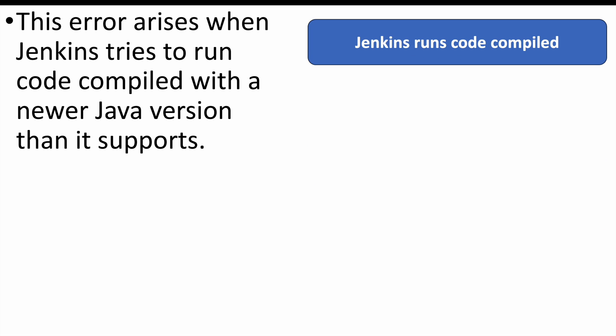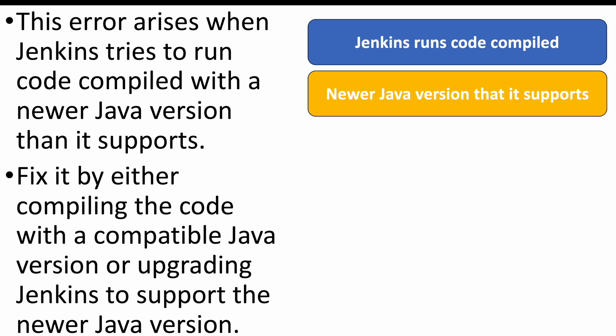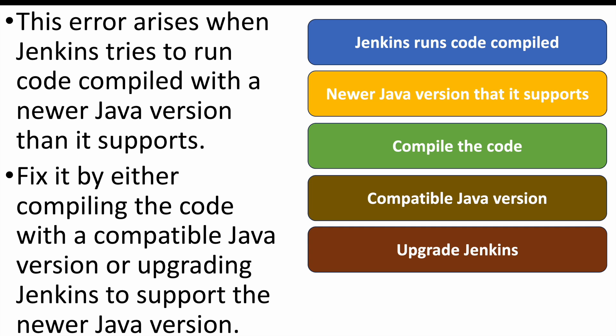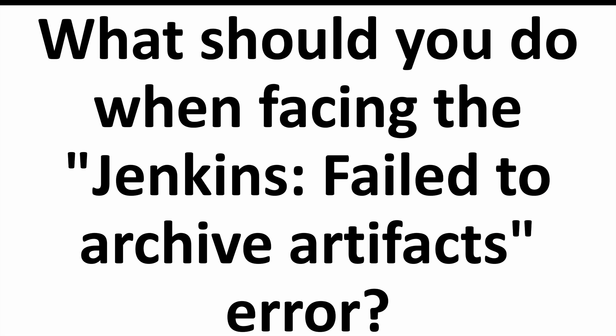The next question: how do you fix the 'Jenkins unsupported major.minor version' error? This error occurs when Jenkins tries to run code compiled on a newer Java version than it supports — for example, code compiled with Java 17 but Jenkins only supports Java 11. To fix it, either compile the code with the compatible Java version (Java 11) or upgrade Jenkins to support the newer Java version (Java 17).